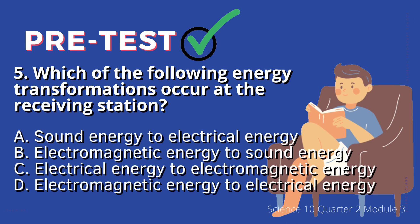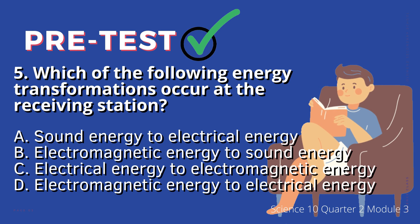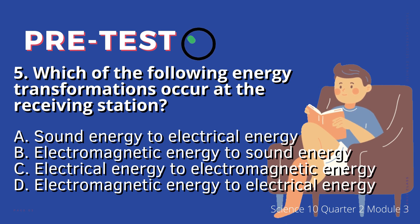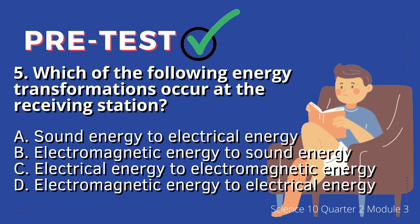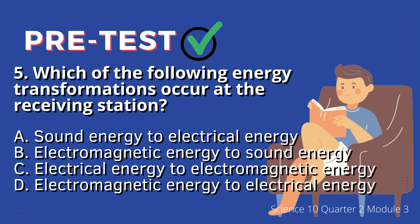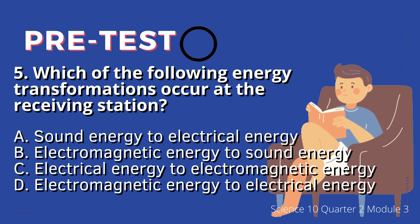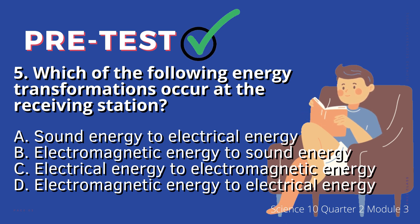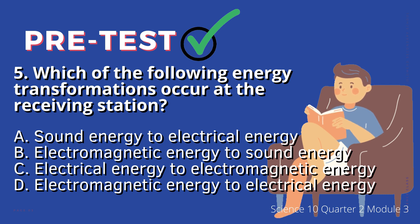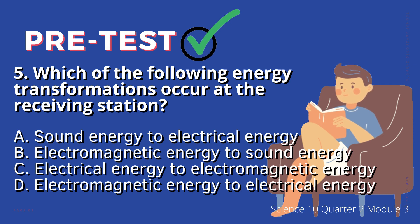5. Which of the following energy transformations occur at the receiving station? A. Sound energy to electrical energy, B. Electromagnetic energy to sound energy, C. Electrical energy to electromagnetic energy, D. Electromagnetic energy to electrical energy.